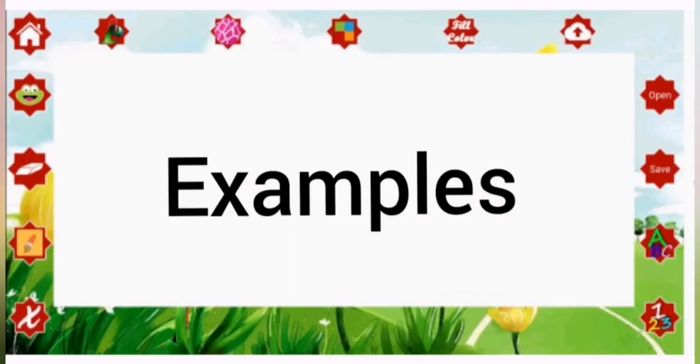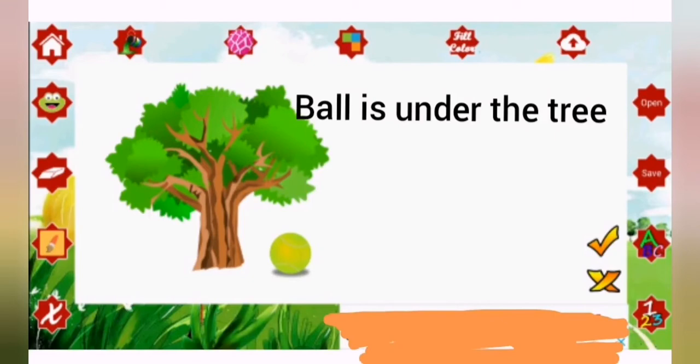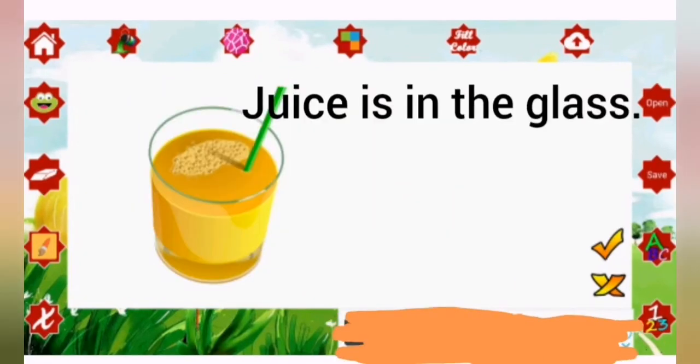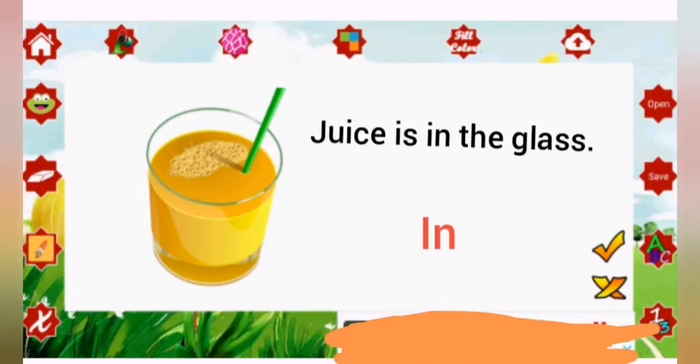Let's come to some more examples. Ball is under the tree. Here, under is preposition. Juice is in the glass. Here, in is preposition.